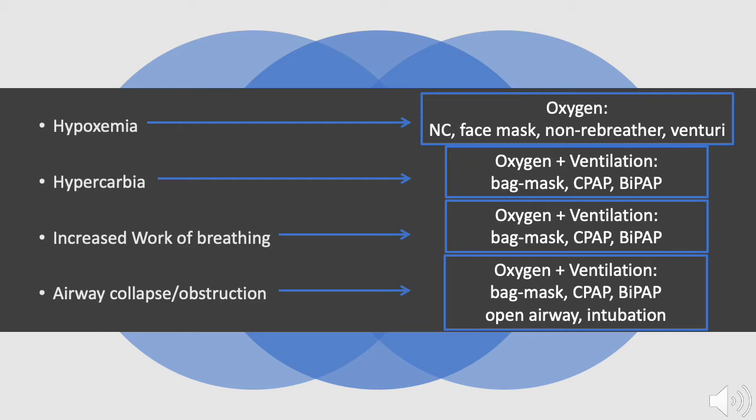Patients can have increased work of breathing for many reasons. However, if the increased work of breathing is not sustainable or gas exchange of carbon dioxide or oxygen becomes compromised, providers must lend support to the patient. These patients usually need both oxygenation and ventilation assistance. Additionally, the obstructed airway needs to be opened in order to get oxygen in and carbon dioxide out.